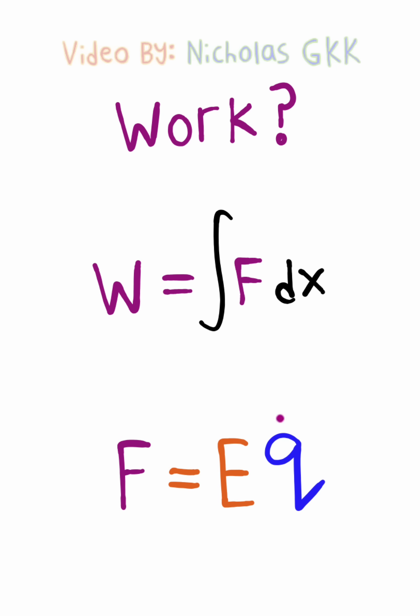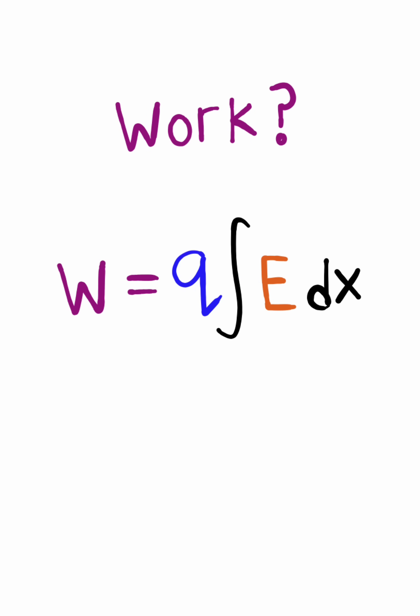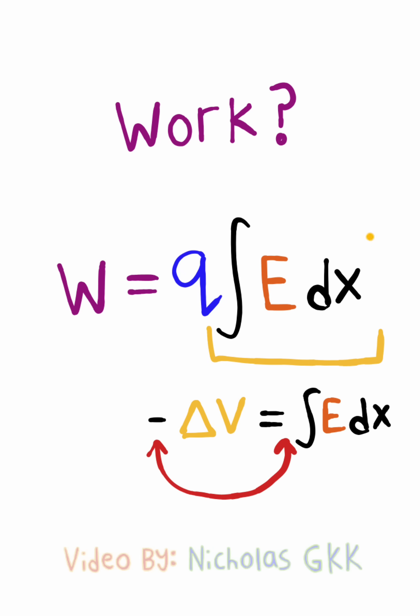So I can rearrange this equation to get the force by itself. Now at this point I can take the constant charge Q and move it outside the integral, and you may notice this portion of the equation is very similar to the voltage formula. We just need to swap the negative sign to make this equation work.